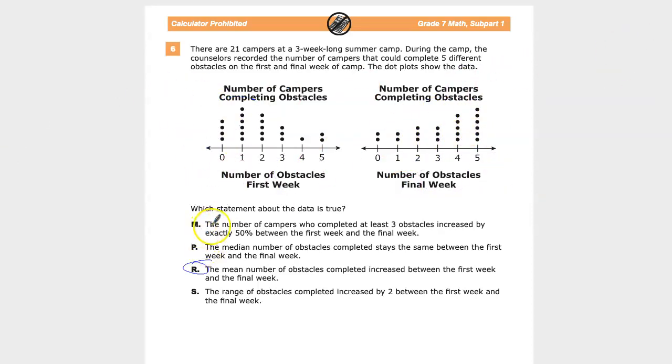Now, in terms of the number of campers who completed at least three obstacles. So in this case, 1, 2, 3, 4. Oh, we did 15, right? 16, 17, 18. So 18. And in this one, oh sorry, I was doing less than 3. Oops. Completed at least 3. So 1, 2, 3, 4, 5, 6.